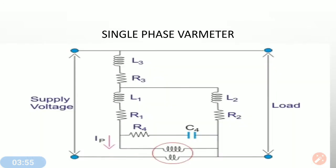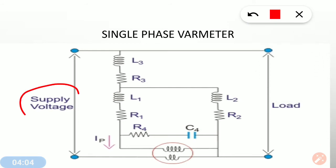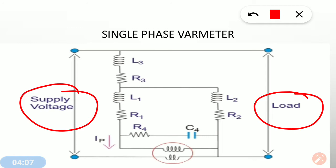Here is the circuit of the single phase VAR meter. On one side there is the supply voltage and on the other side the load is connected. There are basically two coils: one is the pressure coil and the other is the current coil. The coil connected in series with the line is the current coil, and the coil connected between the line and the neutral is the pressure coil of the circuit.